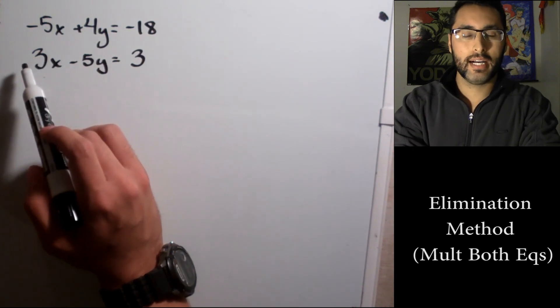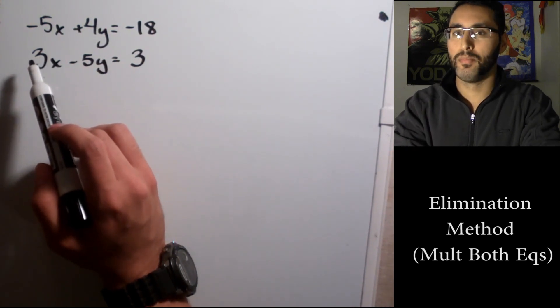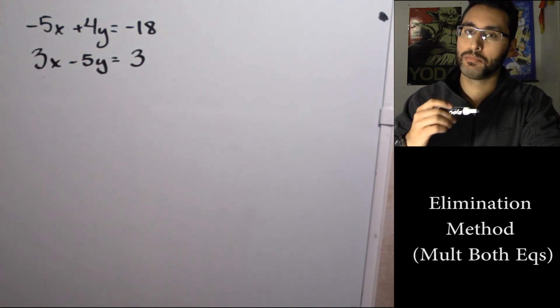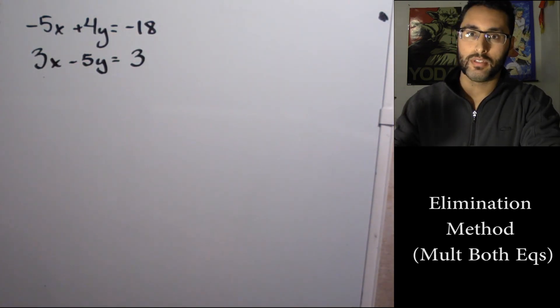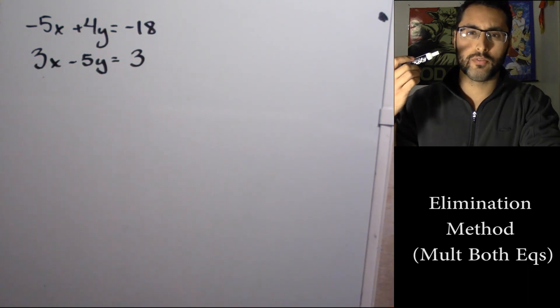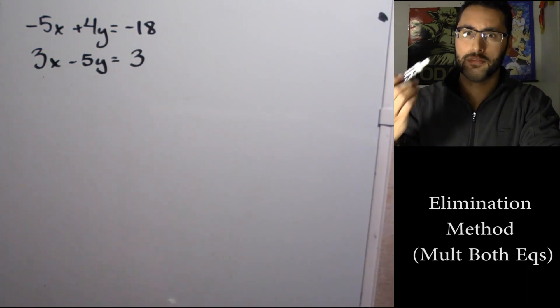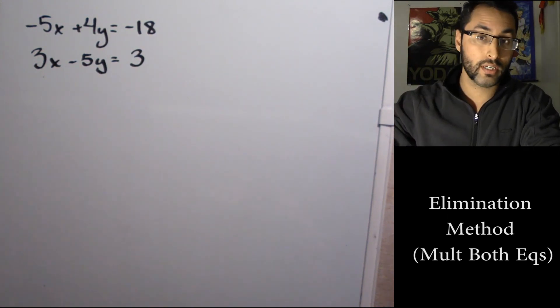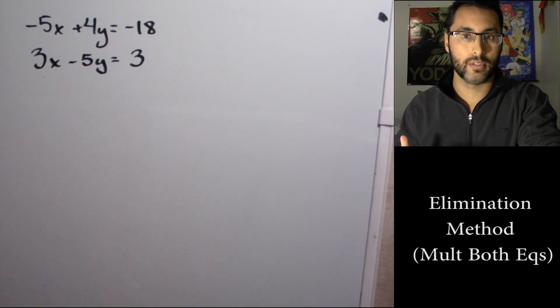What I'm going to do is ask myself: what is the least common multiple, the LCM, of 5 and 3? Meaning what is the smallest number that both 5 and 3 can go into? If I find multiples of 5 like 5, 10, 15, 20, and multiples of 3 like 3, 6, 9, 12, 15, what's the smallest number they both share? It turns out to be 15.